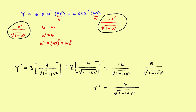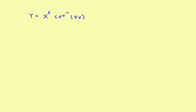Now let's take a look at the second example. This problem involves the product rule — you've got a first thing times a second thing. So it will be the original first times the derivative of the second, plus the original second times the derivative of the first. You can think of x squared as the first thing and the inverse cotangent expression as the second thing.